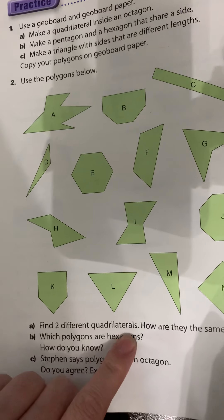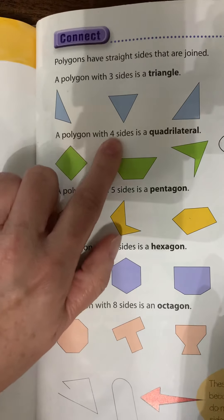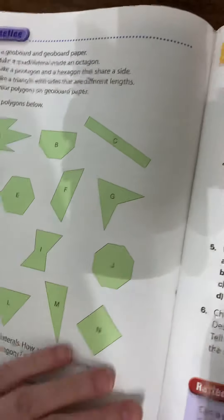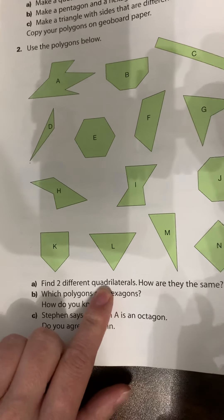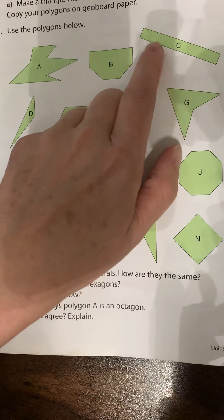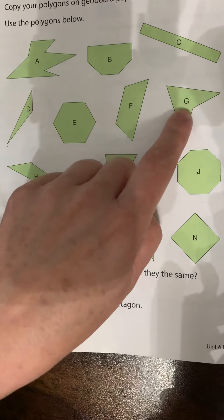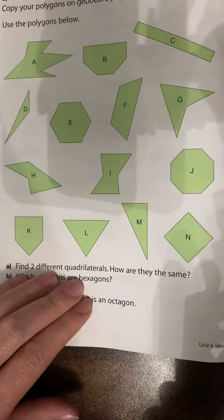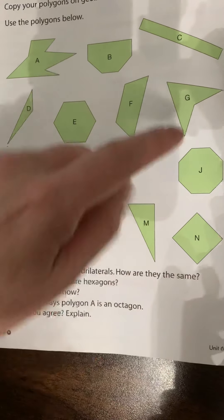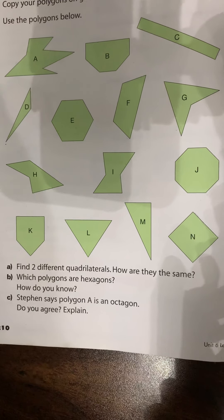Find two different quadrilaterals. How are they the same? You might be thinking, what is a quadrilateral? You have to go back to the page that has all the answers — a polygon with four sides is a quadrilateral. So look for two that have four sides. For example, C has four sides, and G has four sides as well. So you could say C and G. How are they the same? Maybe they have the same number of corners, the same number of sides, or all straight lines with no curves.